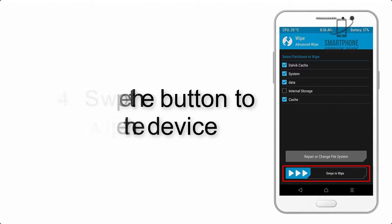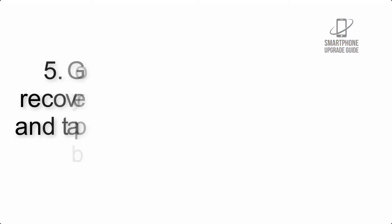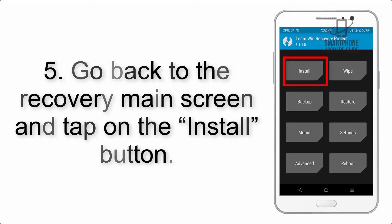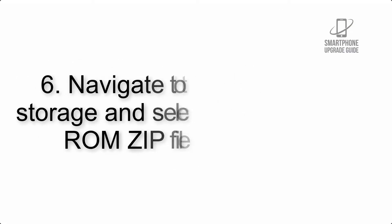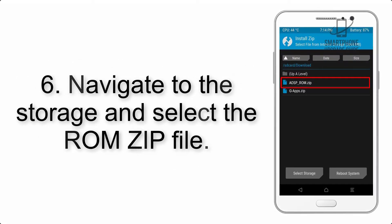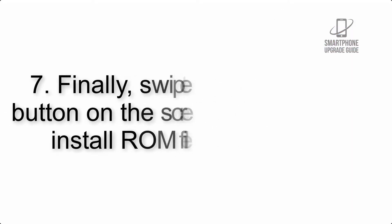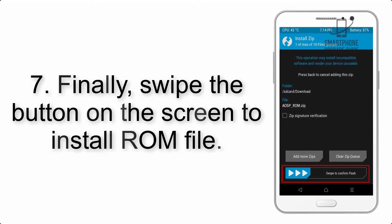Step 4: Swipe the button to wipe the device. Step 5: Go back to the recovery main screen and tap on the Install button. Step 6: Navigate to the storage and select the ROM zip file.